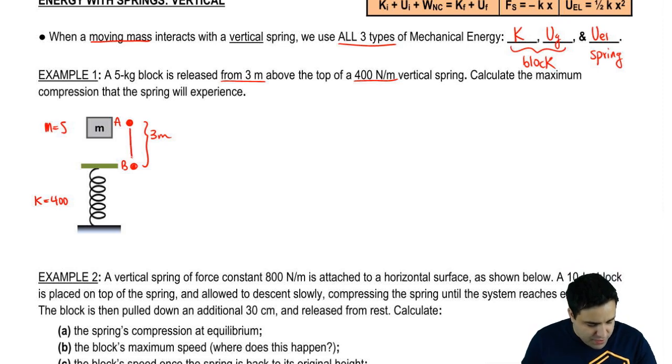And it says calculate the maximum compression that the spring will experience. So if this falls from here to here, it's going to then hit against this little platform here, and it's going to cause the spring to be compressed further down until the system stops. So it's going to go down a little bit more to another point. Let's call this point C. And it will have some compression. That maximum compression is what we want. So I'm going to call this XC because it's the compression at point C right here.